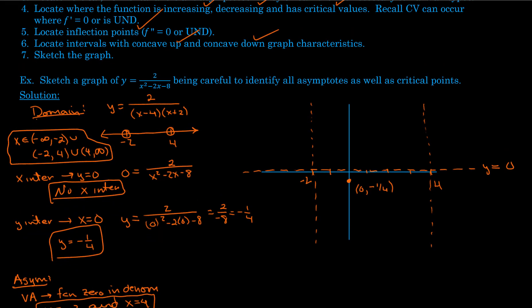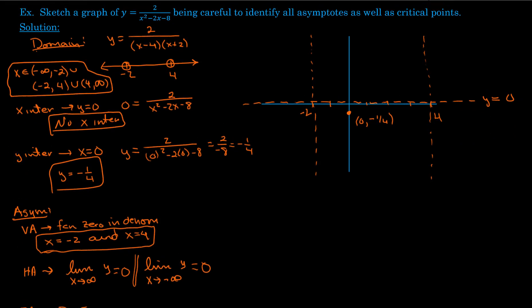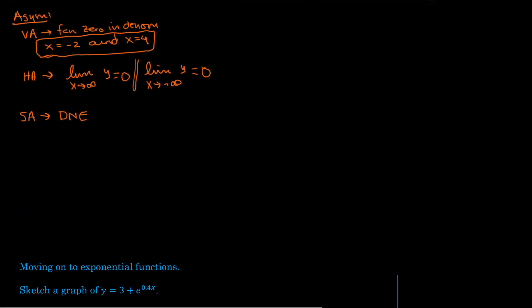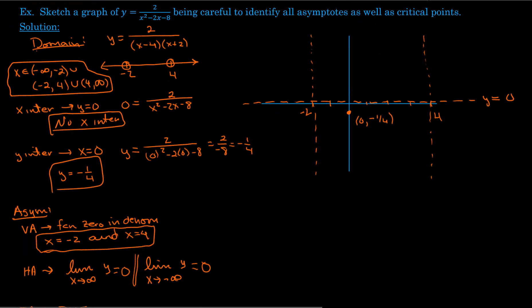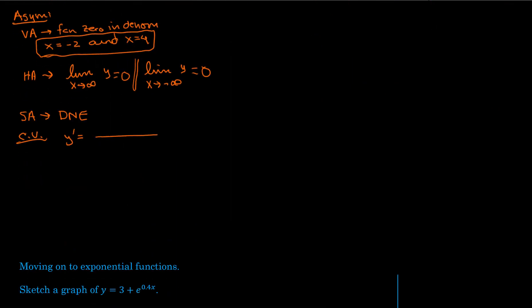Next, we locate where the function is increasing, decreasing, and find critical values. This occurs where the derivative is 0 or undefined. So we need to take the derivative of this function. I'm going to compute y' using the quotient rule.